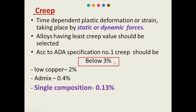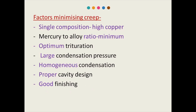Factors that minimize creep: First, selection of material — single composition high copper amalgam has the least creep value. Second, mercury to alloy ratio should be minimum; excess mercury leads to increased creep. Third, trituration should be optimum — not under or over triturated. Fourth, condensation pressure should be large to remove excess mercury and reduce voids, and should be homogeneous throughout. Fifth, cavity design should be proper, following GV Black's principles. Finally, the restoration should be well finished and polished with no rough surfaces or overhanging margins.